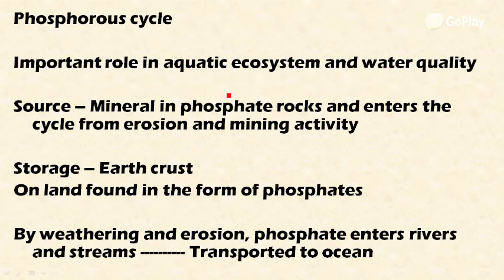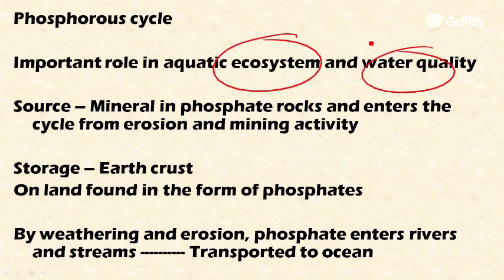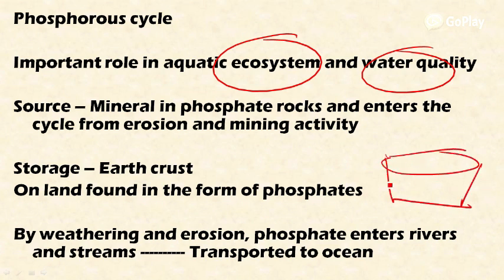The first thing is the phosphorus cycle. Phosphorus has an important role in the aquatic ecosystem and water quality. If phosphorus is present in more than the required proportion — for example, in more quantity in a water body like a lake — it may lead to an unstable situation and it acts as a pollutant.